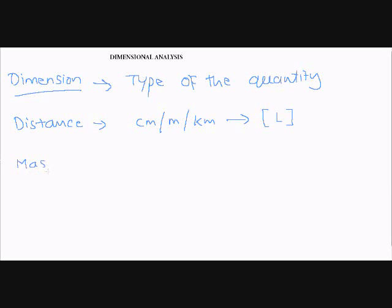Now, for mass, whether you use kilograms or grams or pounds, the dimension would be the type of this quantity, which is represented by letter M in square brackets.